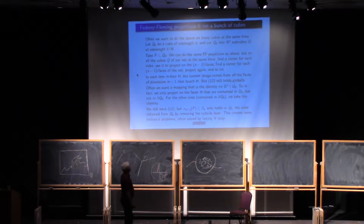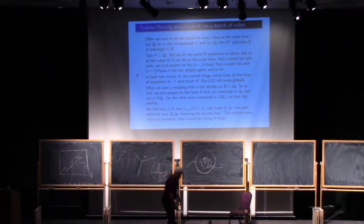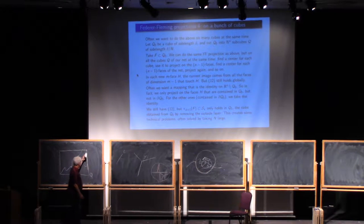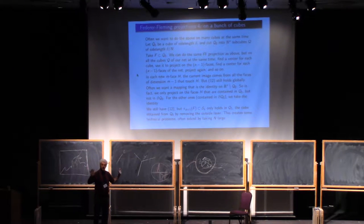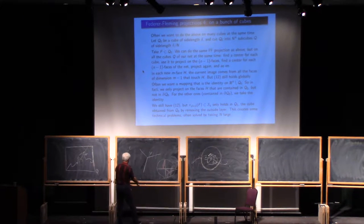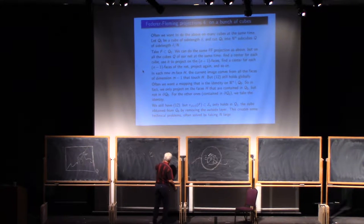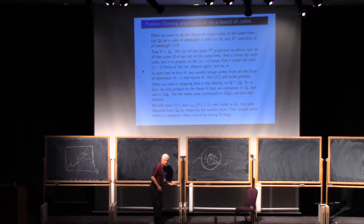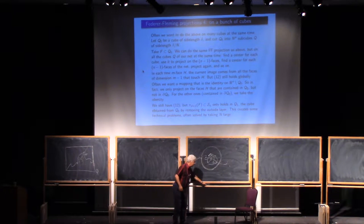Step number three: we do that on a bunch of cubes. Why would you care doing it on a bunch of cubes? Because on the boundary of this cube, we've been moving points around. But remember, we'll have to construct competitors of deformation subsets, and for deformation subsets there is a place where the thing has to be the identity. So it's not so clear that I should be able to move points on the boundary. So I'll put a cushion between what I like to do — which is do the full Federer-Fleming projection — and what I can actually do, which is a full Federer-Fleming projection most of the time, and change it a little bit near the boundary.